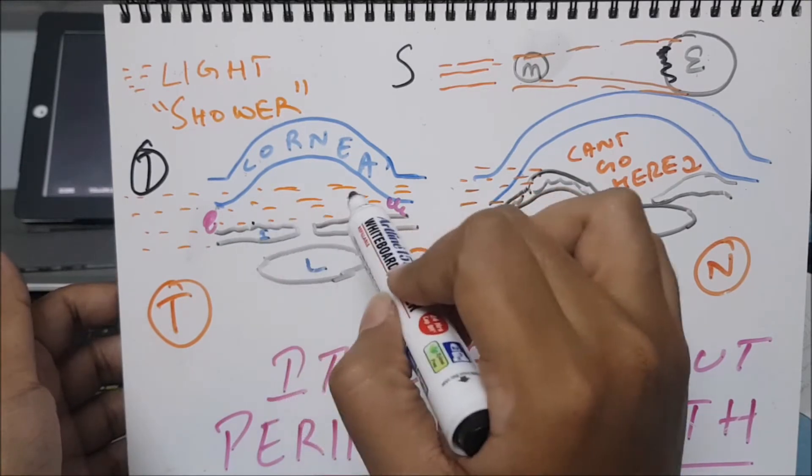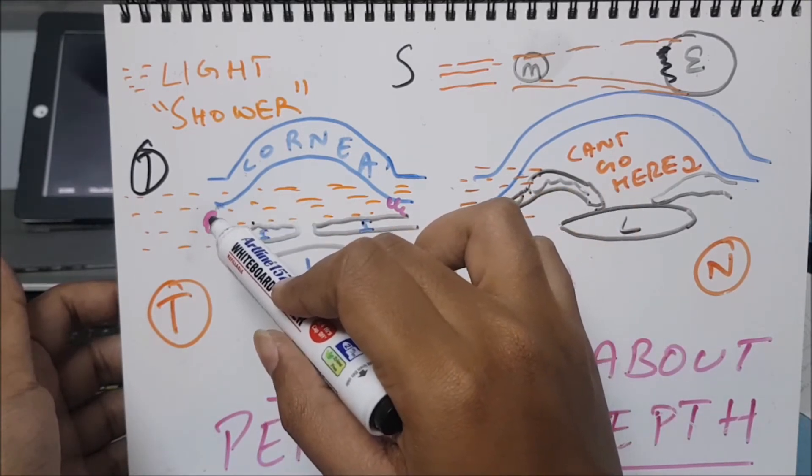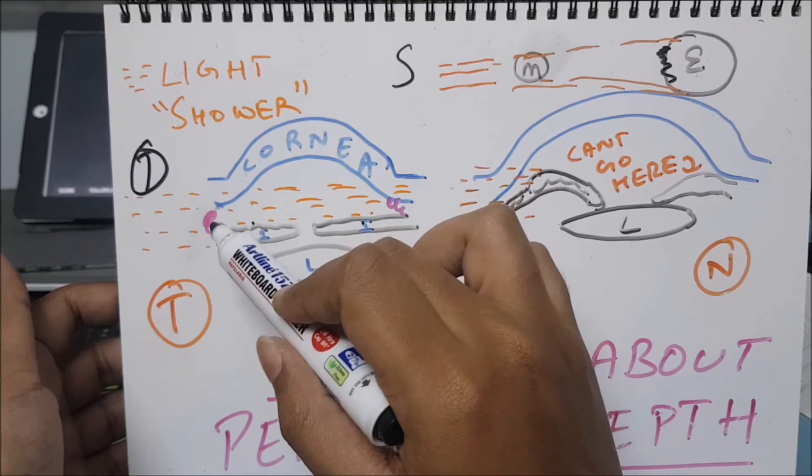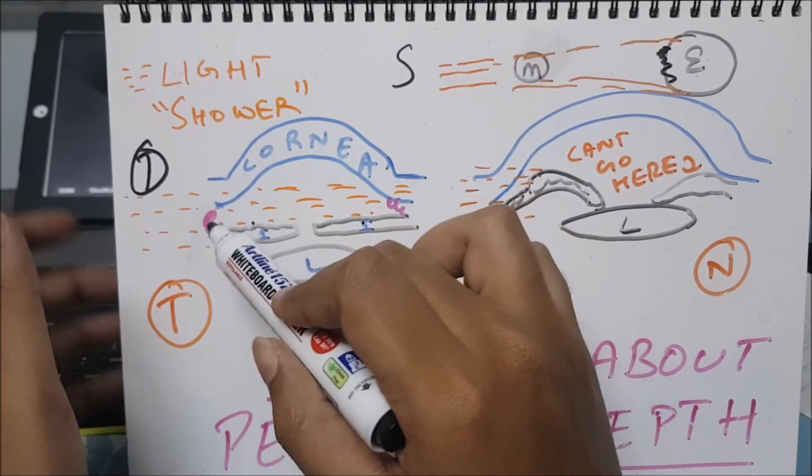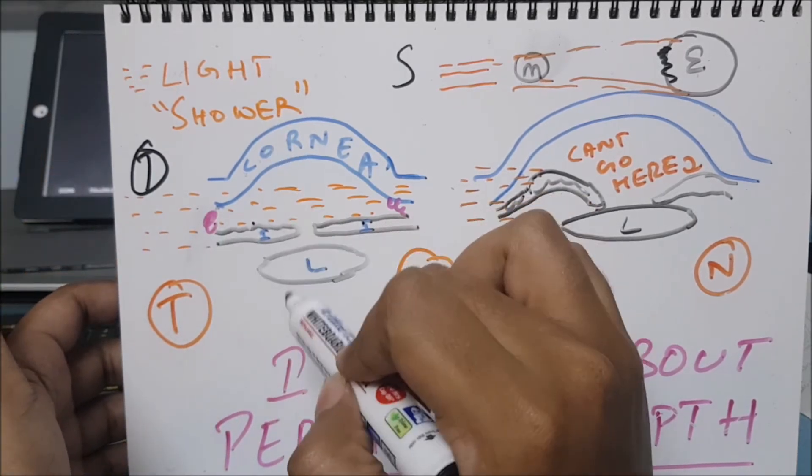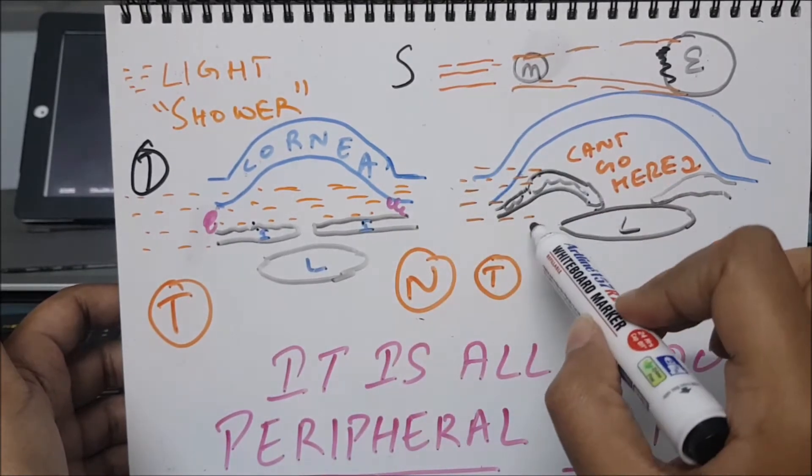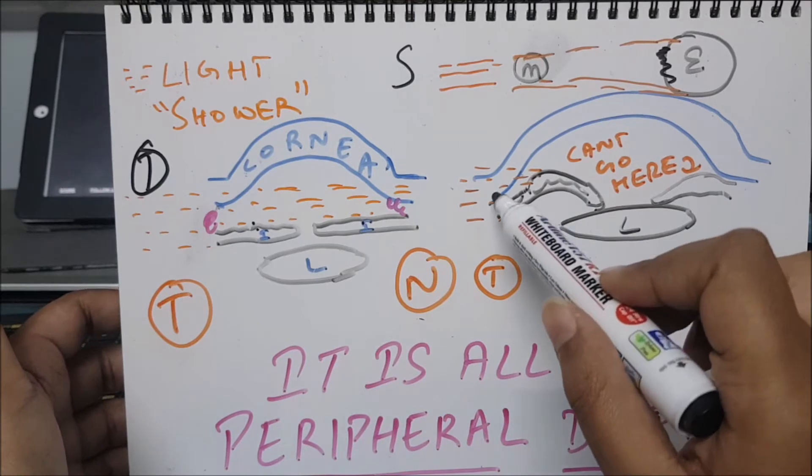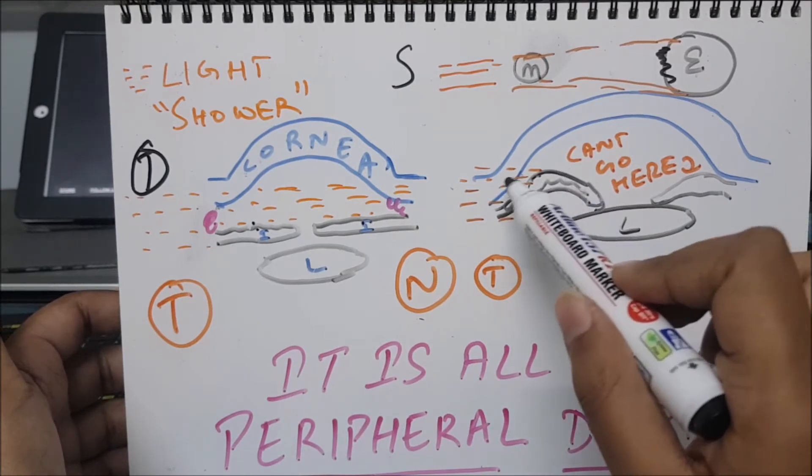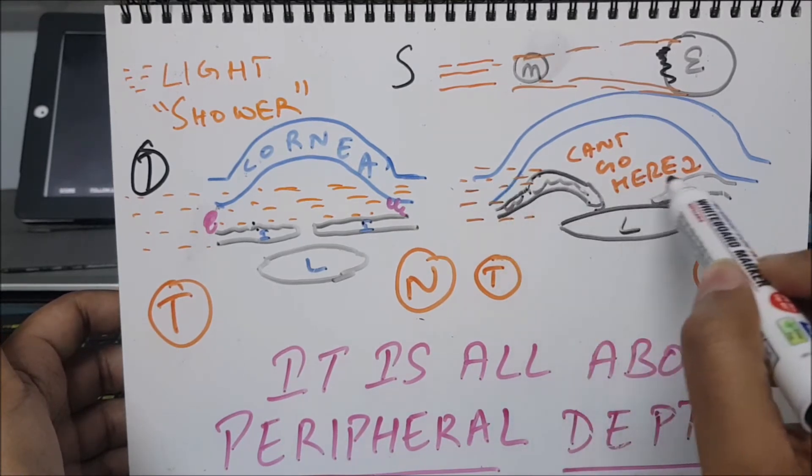If the light is traveling from here, in this normal part there is no obstruction. This is the trabecular meshwork. This is iris, cornea, and lens. The light will travel from here to here.